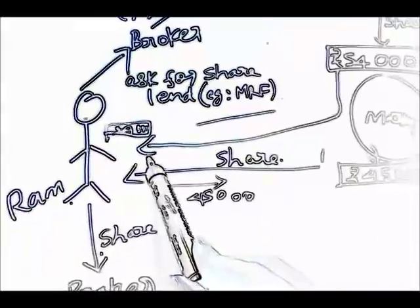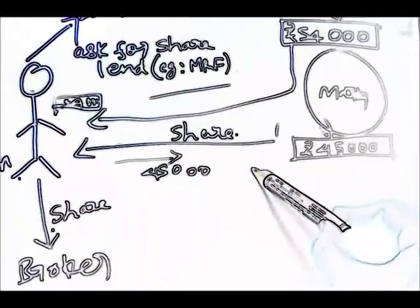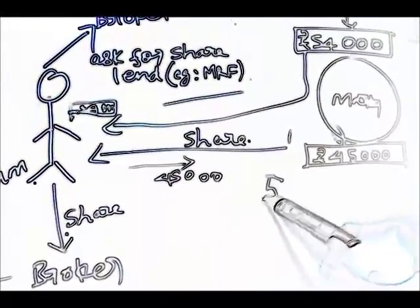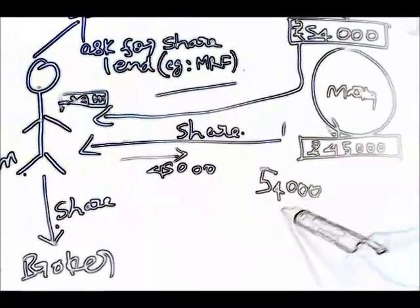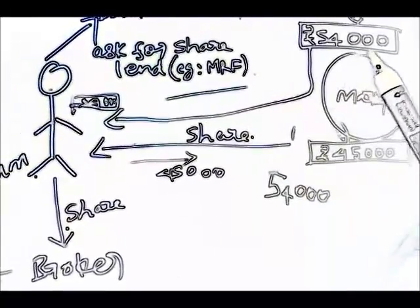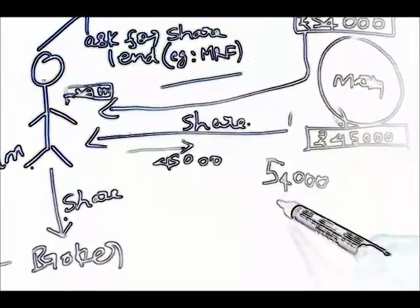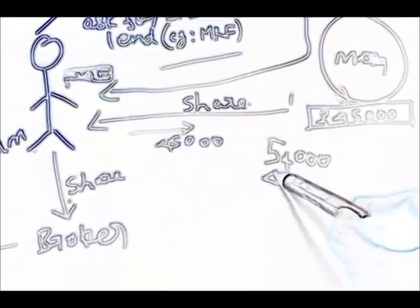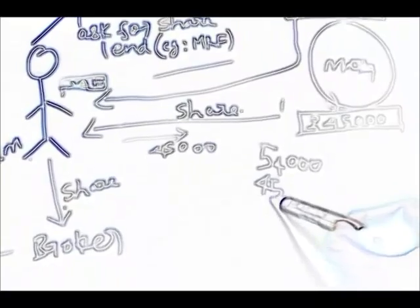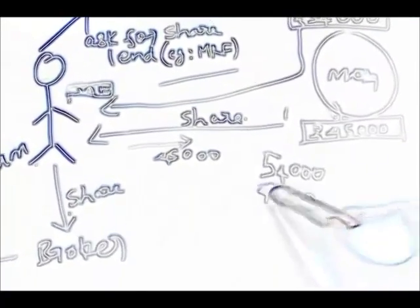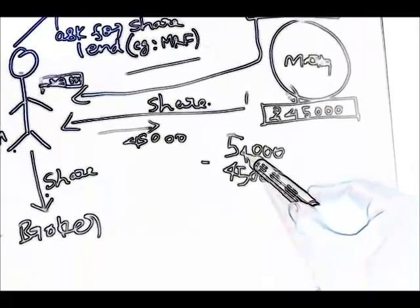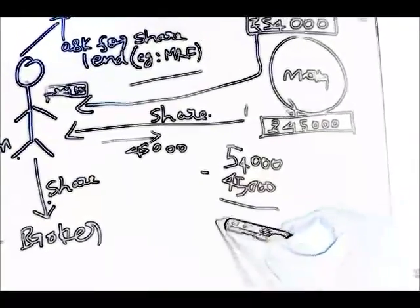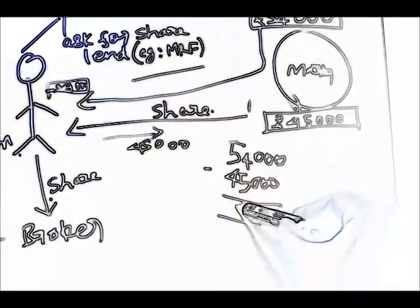So here if you calculate his profit, he got the first day 54,000 on behalf of selling that share, and on behalf of buying the share he spends money of 45,000 and he gets the money of 54,000. The net sum amount is 9,000.